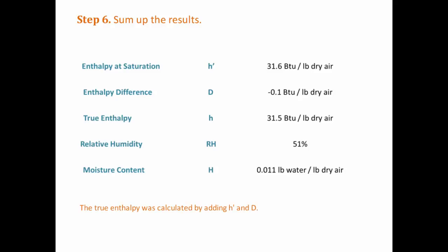Finally, we've finished reading the chart. We find the true enthalpy by adding up the enthalpy at saturation and the enthalpy difference. We get 31.5 BTU per pound of dry air. This gives us everything the question asked for: the true enthalpy, the relative humidity, and the moisture content.